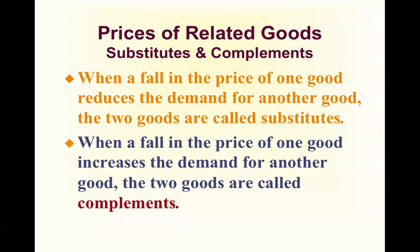When a fall in the price of one good increases the demand for another good, the two goods are complements — goods that go together. For example, going to a movie, one must have popcorn; using a computer, one must have a printer; with paper, one must have a pen. So when the fall in the price of movies increases the demand for popcorn, the two goods are complementary. Businesses often reduce the price of one good hoping to bring customers in so they can sell a more expensive complementary item.